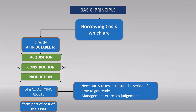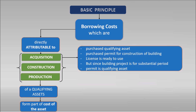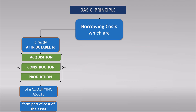We can say that an asset that normally takes more than a year to be ready for use will usually be a qualifying asset. Acquisition means you have purchased a qualifying asset. Normally a purchased asset will always be ready for use — but for example, if a company has purchased a permit for construction of a building, the license itself is ready to use, but since the building project takes a substantial period and the permit is linked to this qualifying asset, you can capitalize the borrowing cost of the permit.